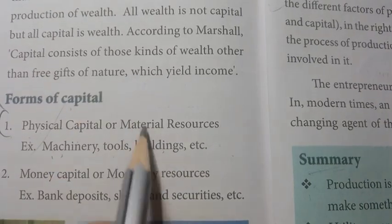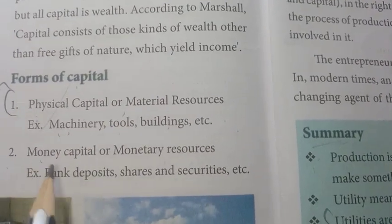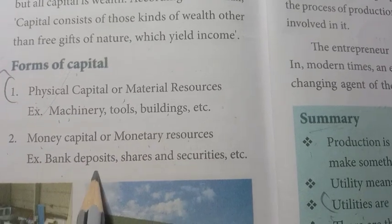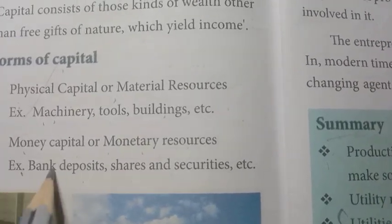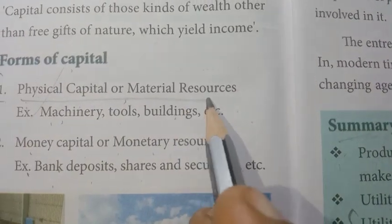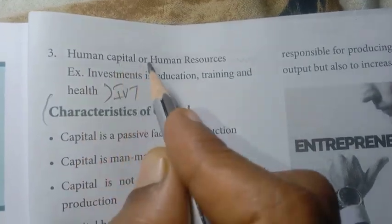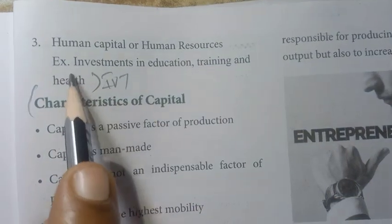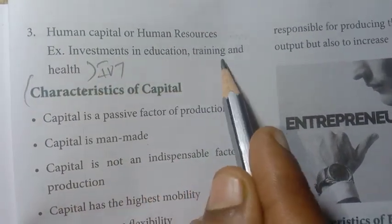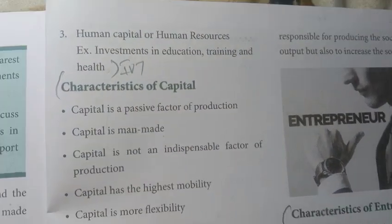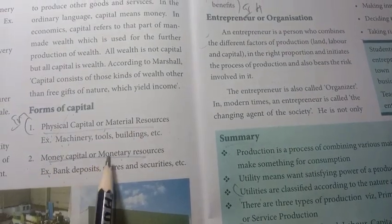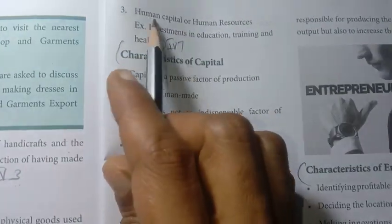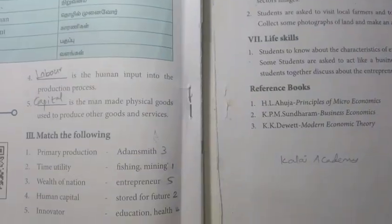Division of labour resources. The three forms of capital are: first, physical capital or material resources; second, money capital or monetary resources - for example bank deposits and shares; and third, human capital or human resources - investment in education, training, and health. These are the three forms of capital.